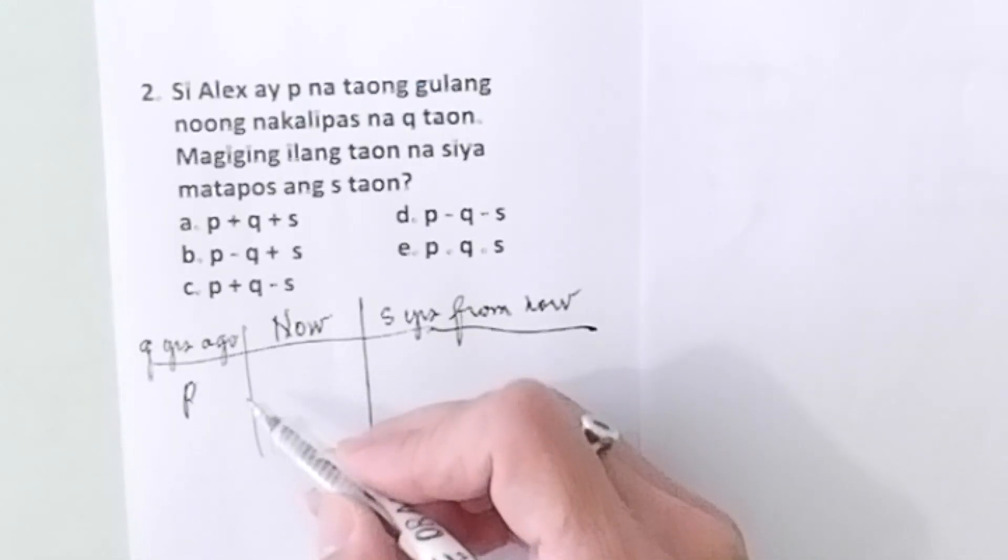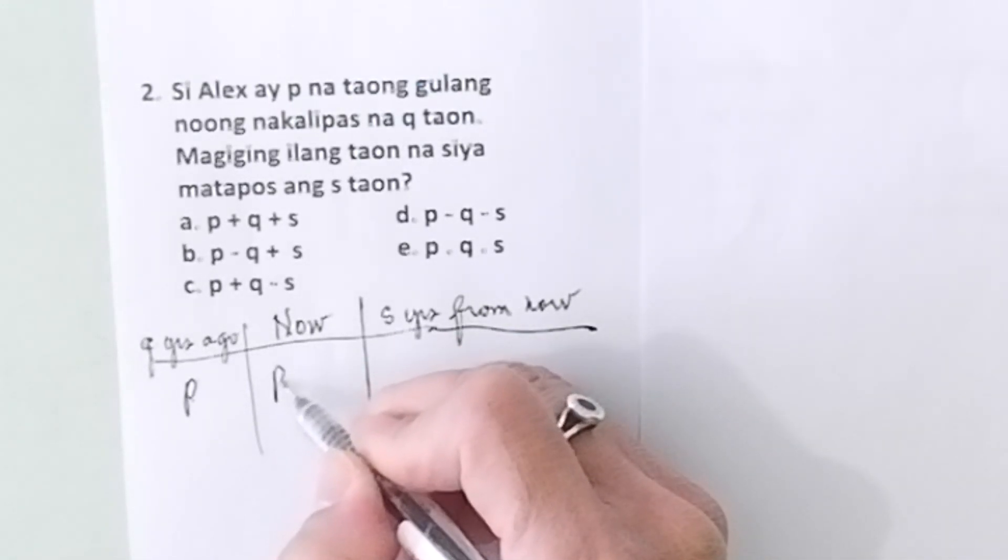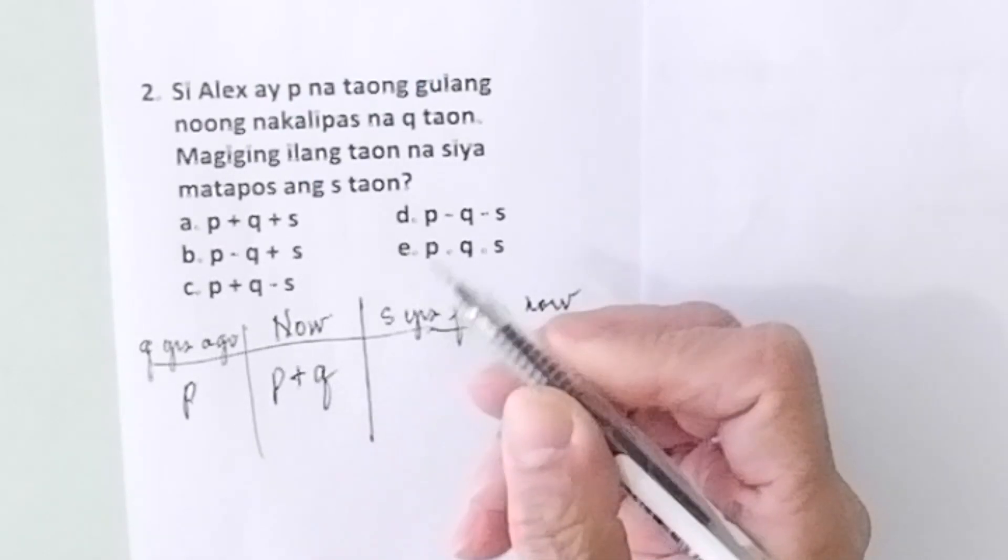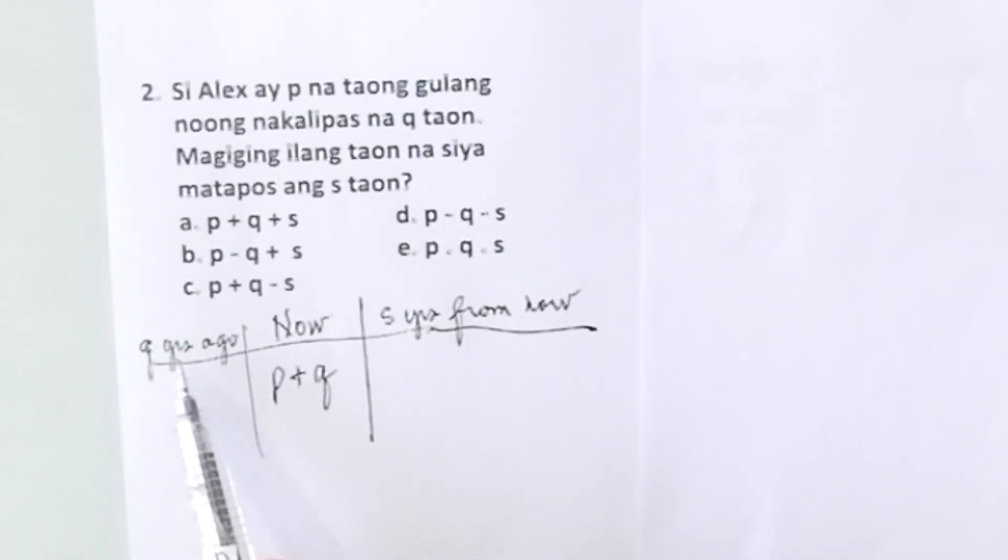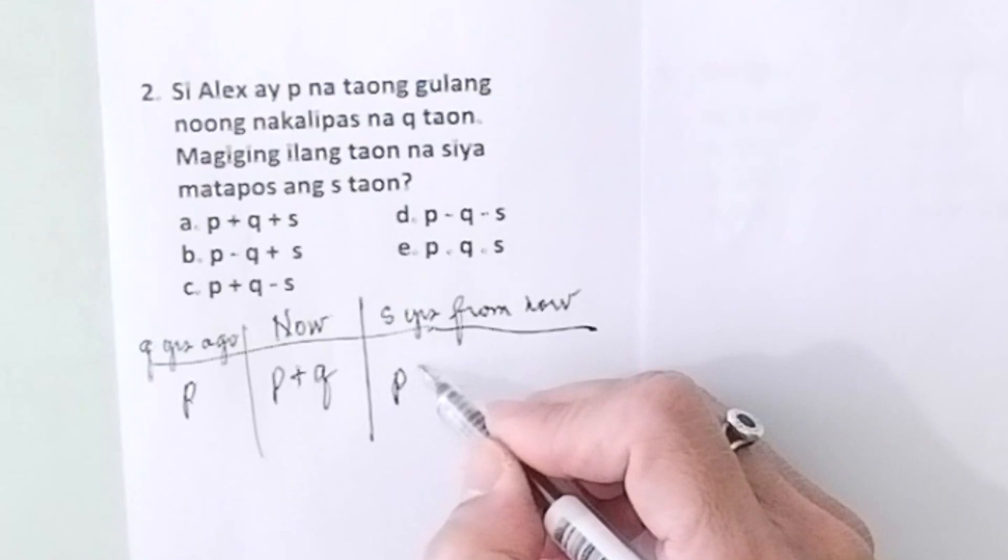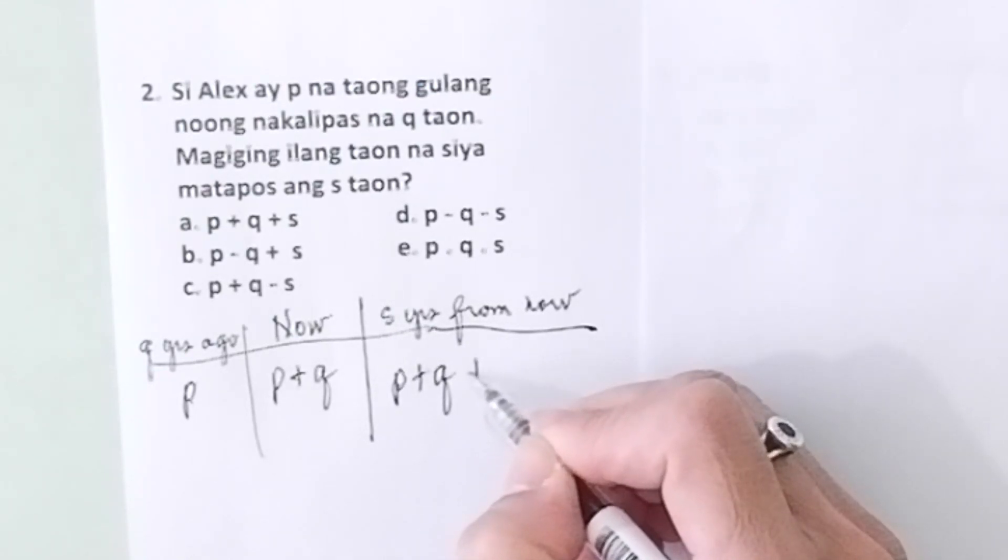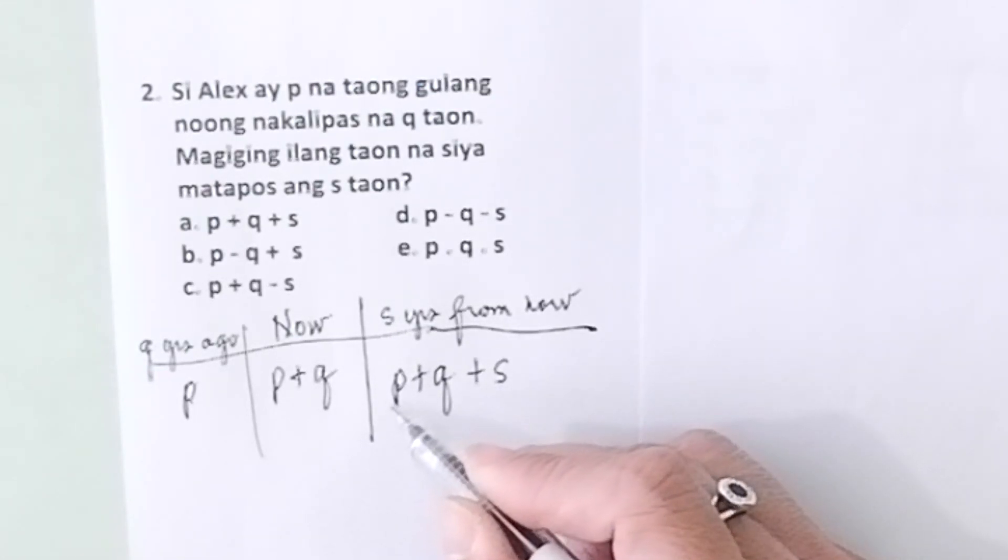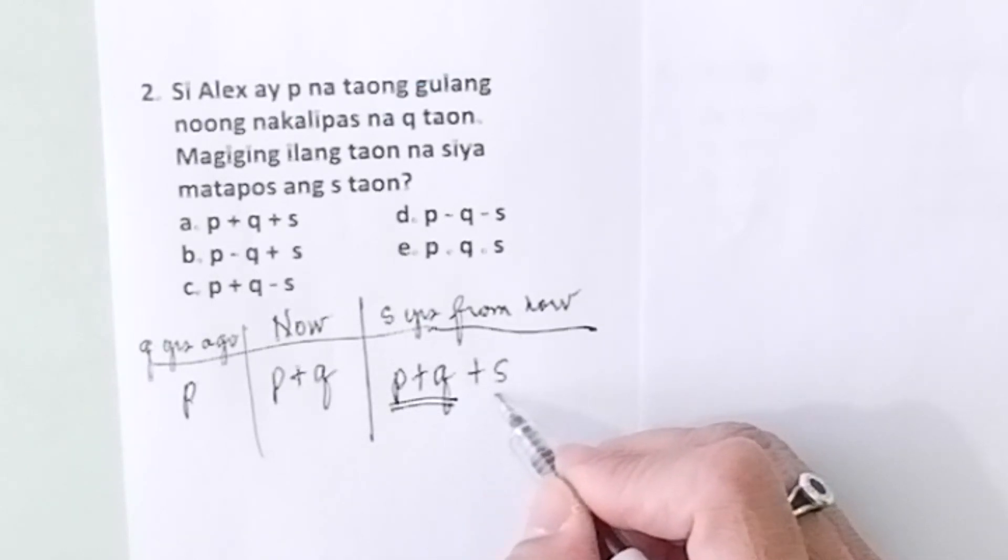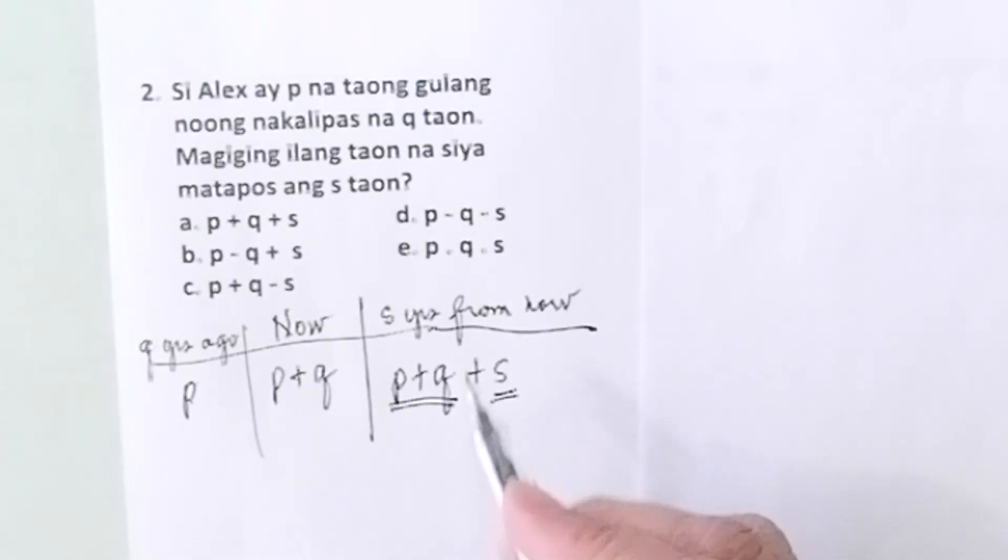Therefore, now he is P plus Q. Remember, Q years ago he was P, so now he is P plus Q. S years from now, so you will add S to now. This is now, and then S years from now. So the correct answer is P plus Q plus S, letter A.